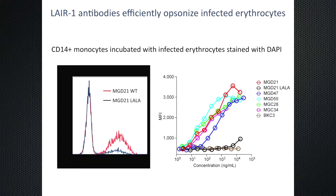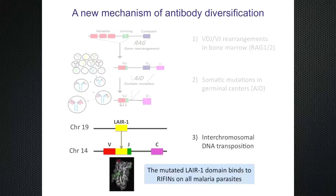Surprisingly, we come up with a new model of generating antibody diversity: interchromosomal DNA transposition. In this case, LIR1 from chromosome 19 generates a backbone that, with a few mutations, can develop into very potent malaria-reactive antibodies.